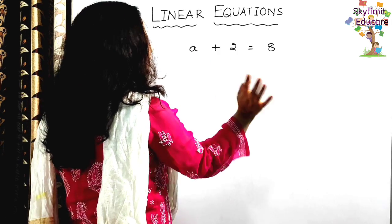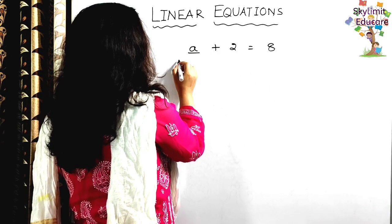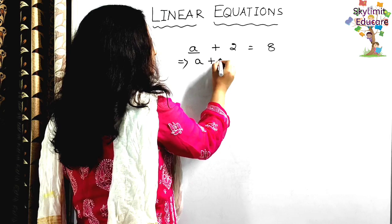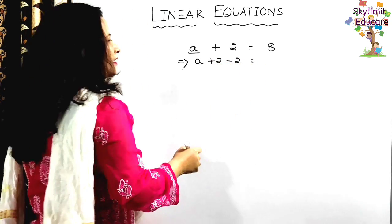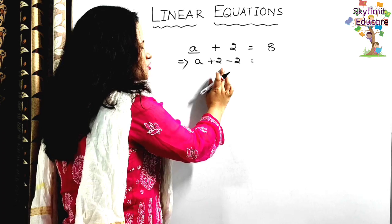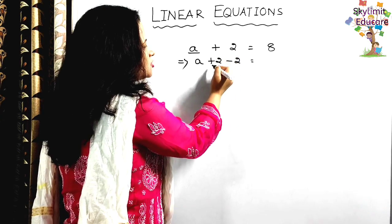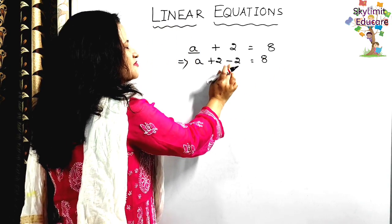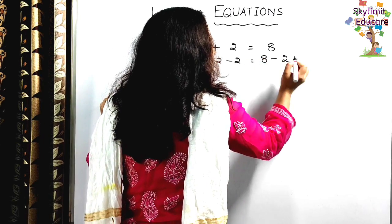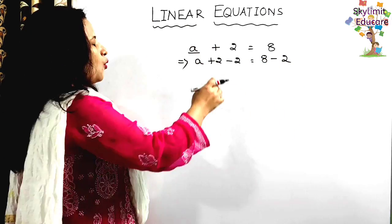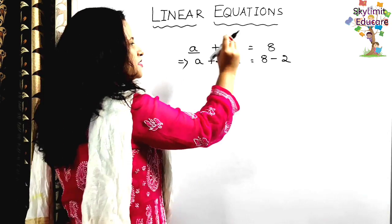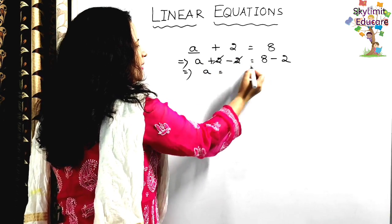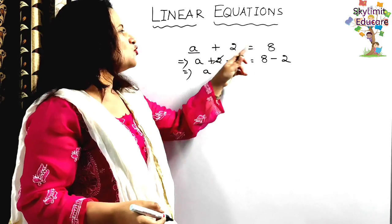My goal is to find the value of a. In the equation a plus 2 equals 8, on the left-hand side there is an extra plus 2. To remove it, I subtract 2 from both sides. Plus 2 minus 2 cancels out. On the right-hand side: 8 minus 2 equals 6. So a equals 6. You can verify: 6 plus 2 equals 8.